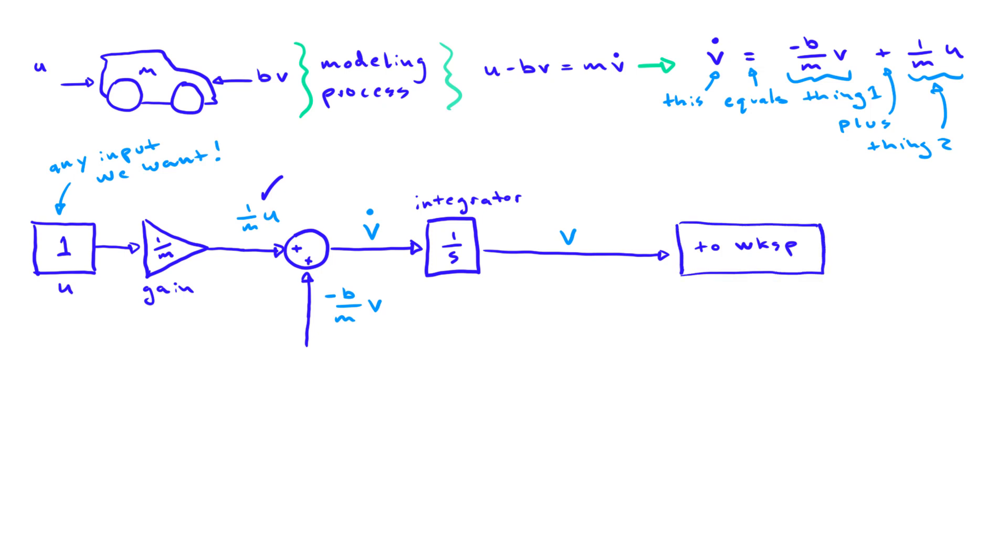Now going back to the other signal, we can use a gain block to do the inline multiplication of b over m, and it needs to be multiplied by v, which we can simply pick off from the output of the integrator. To address the negative sign, you can either use a gain of negative b over m or you can simply change the sign in the summing junction to a negative value. Just make sure you don't do both, otherwise you'll end up with a double negative.